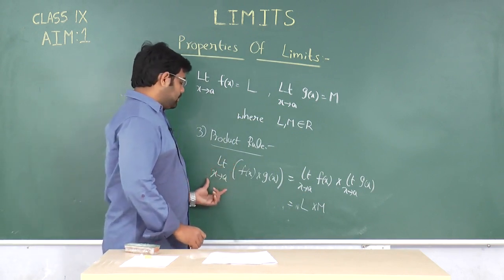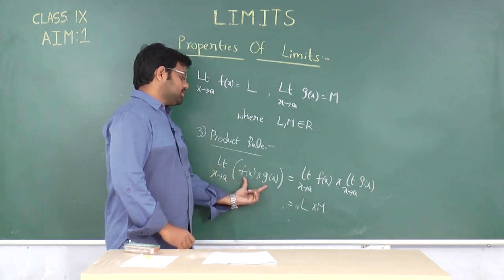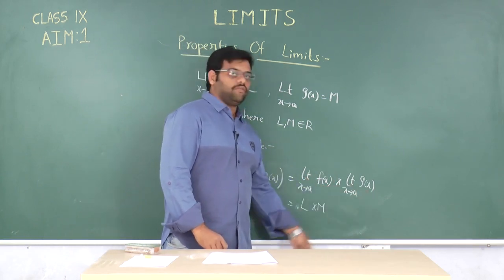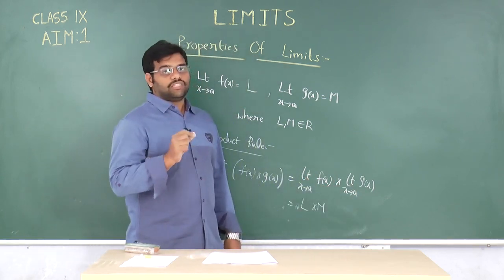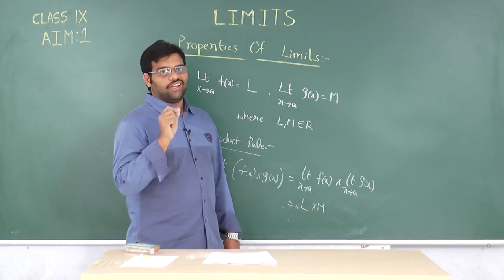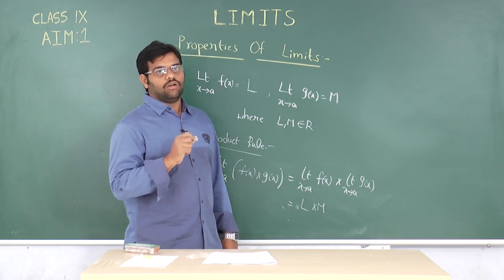That means, limit of product of two functions can be written as limit of first function into limit of second function. If limit x tends to a, f of x and limit x tends to a, g of x exist and they are finite, this is called product rule.